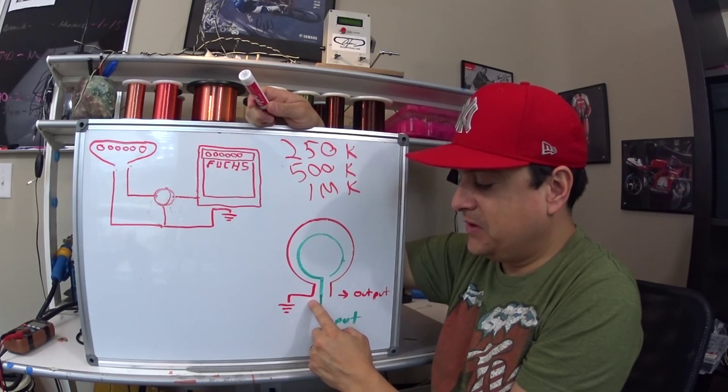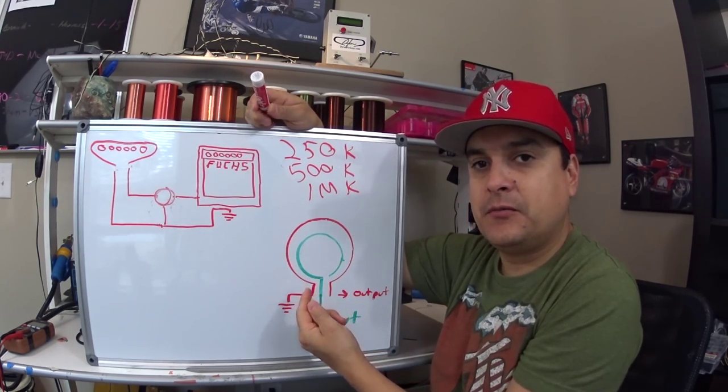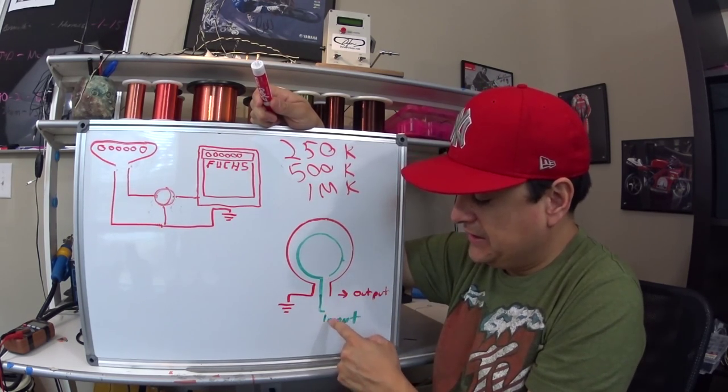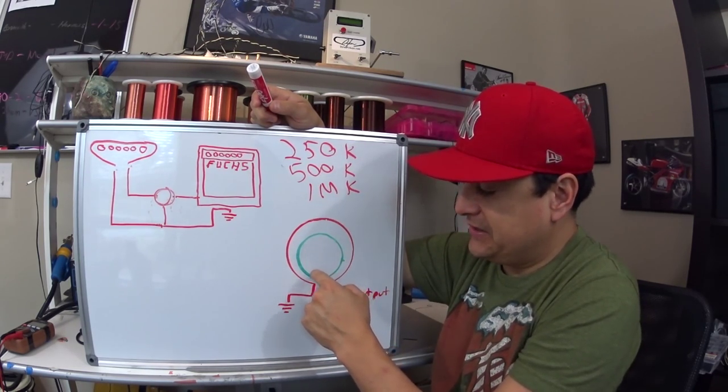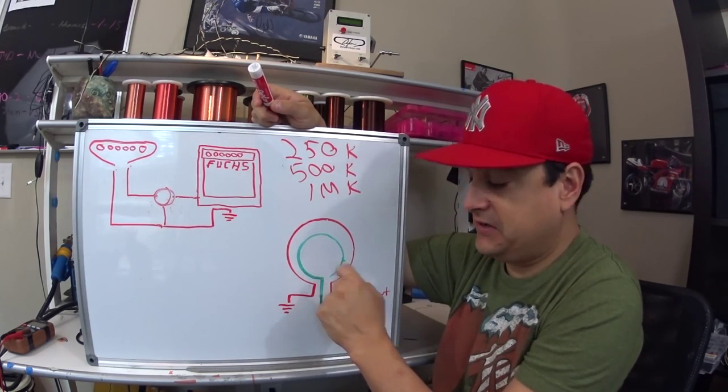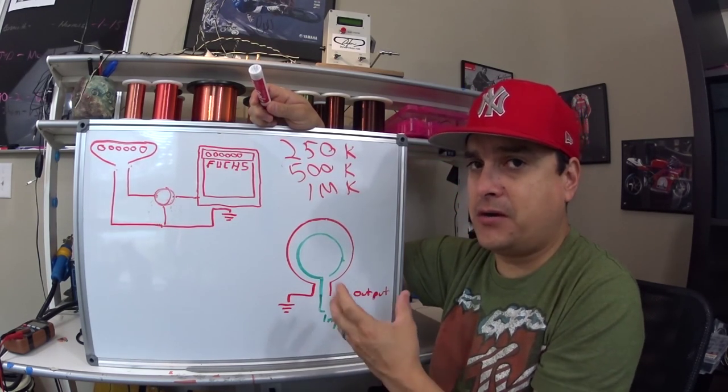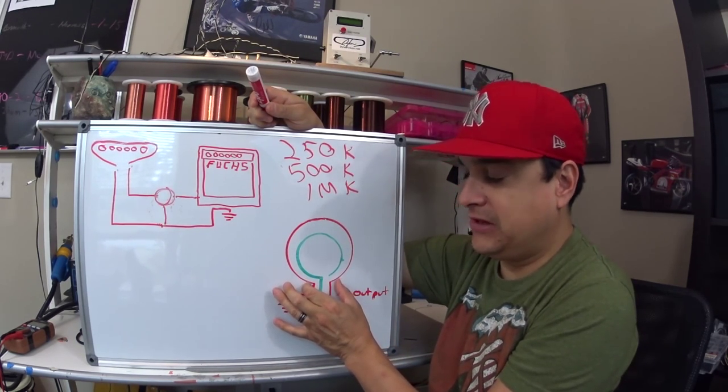One leg, there's three legs, one leg is usually bent over and soldered to the case, which is shorted directly to ground. The input comes in from your pickup and it goes around in a circle and it's actually the full input signal here. The outer ring is usually some kind of carbon or graphite that has a set resistance to it for the whole length.